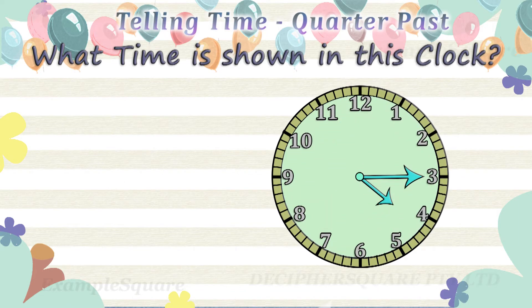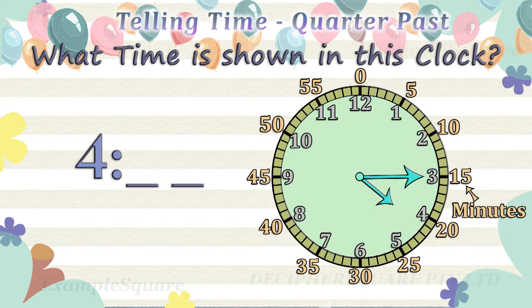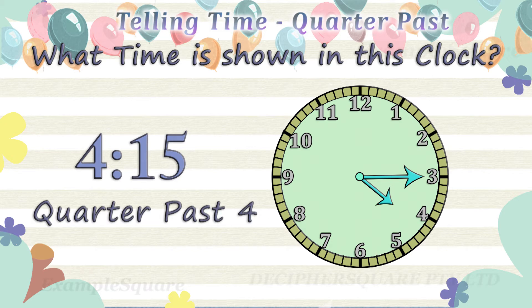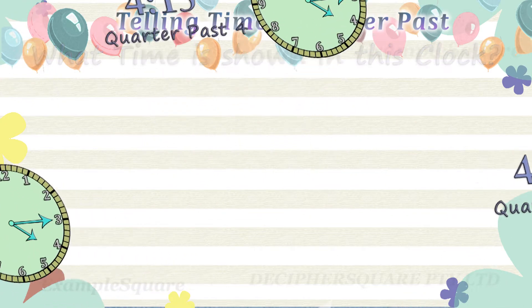What time is shown in this clock? The short hand, that is the hour hand, is pointing in between 4 and 5, so the time is 4 hours and some minutes. The long hand, that is the minute hand, is pointing at 3, referring to 15 minutes. The time is 4:15, that is 15 minutes past 4. 15 minutes is quarter of an hour, so the time is quarter past 4.